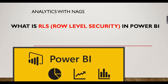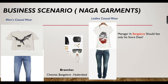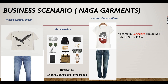Using our business scenario, Naga Garments — we are exploring Power BI using this garments business — today there is a question: the manager in Bangalore should see only his data. We have developed a dashboard and deployed it in Power BI Services. As soon as the manager of the Bangalore branch logs in, he should see only his data. Right now they can see all the data irrespective of the filters. How to do it? This is called row level security — basically applying the security restriction at the data level.